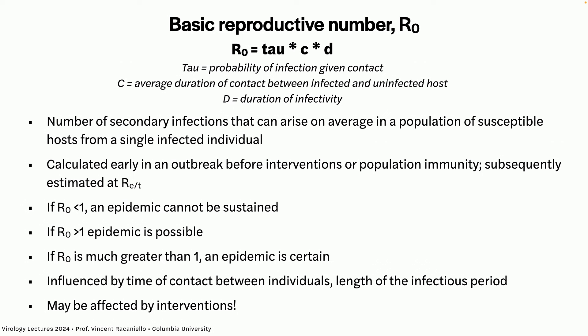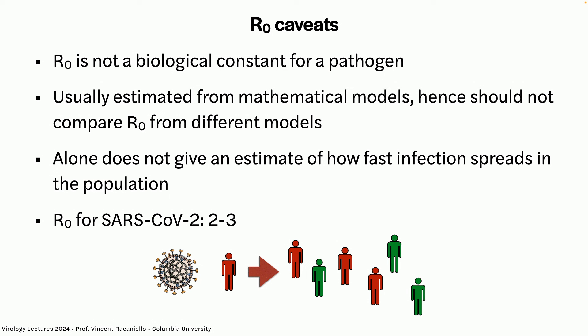The most useful aspect of R0 is that if it's less than one, an epidemic will not be sustained; if greater than one, it will be sustained. But it's influenced by time of contact, length of infection, and interventions. The press was very bad at interpreting R0s — epidemiologists would report that a variant's R0 is three times the original virus and everybody freaks out. But when alpha spread in the UK in December 2020, Boris Johnson opened bars and stadiums at the same time — they didn't take that into account for the R0 calculation.